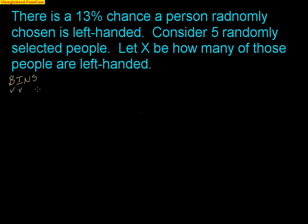N means I must be given a specific number of trials. I was given that there are five people I'm going to look at, so that is met. And finally, S — the probability of success must stay the same, which means every single person has a 13% chance of being left-handed. That probability is not changing as we move on.